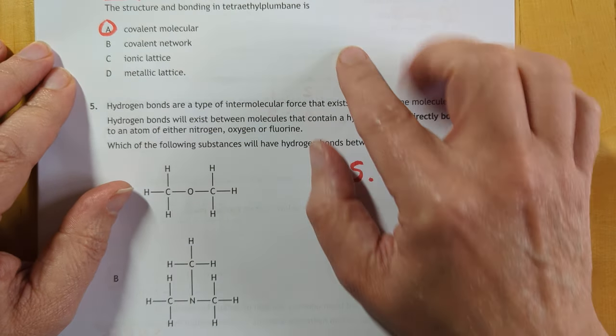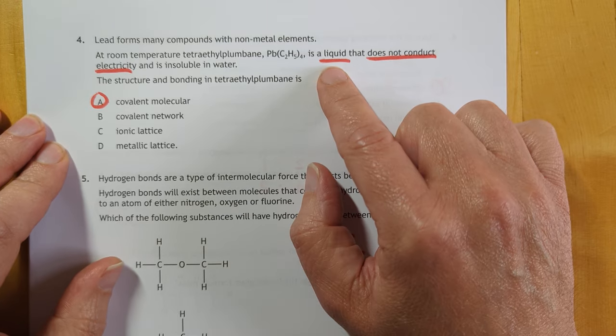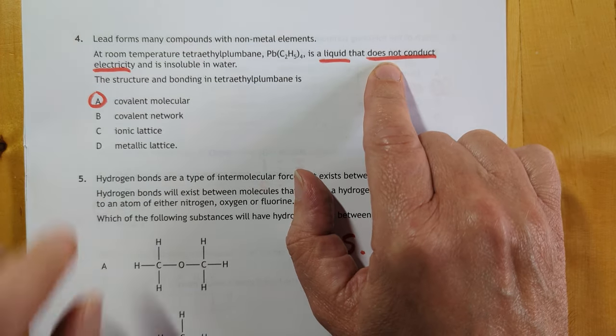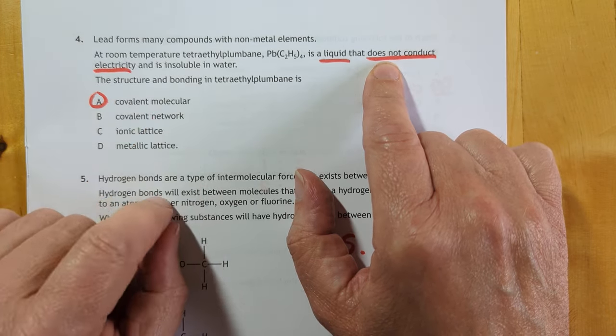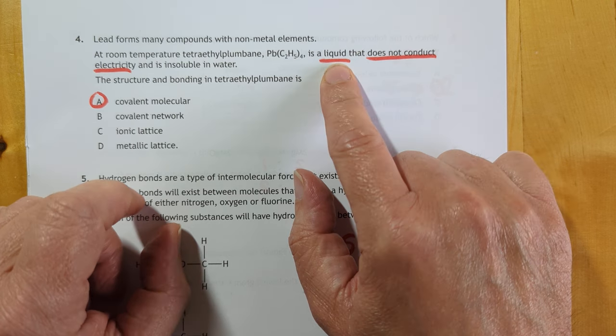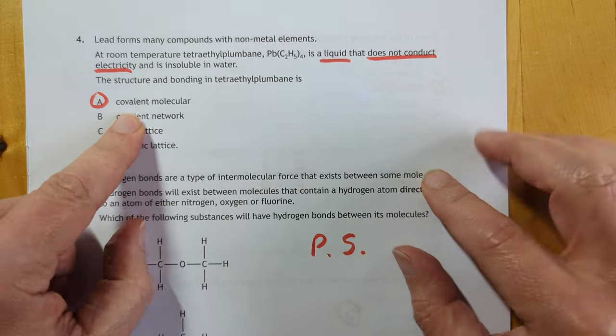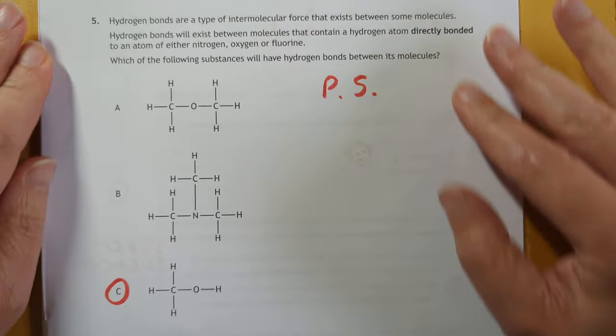Lead, I like this one. They've given loads of clues on this to the bonding, because lead is a liquid that does not conduct electricity, which means it's molecular. And the fact that it's a liquid at room temperature means it's got a low boiling point. It's a molecule. Not a giant equivalent network.